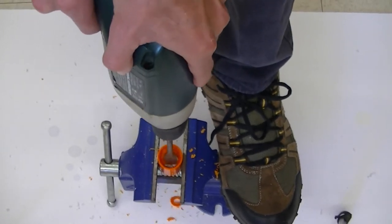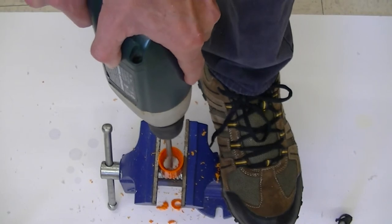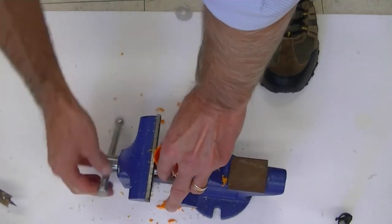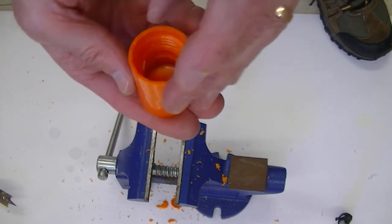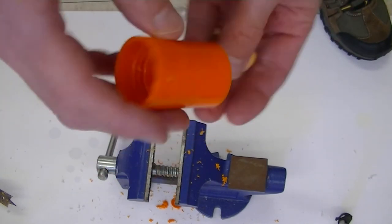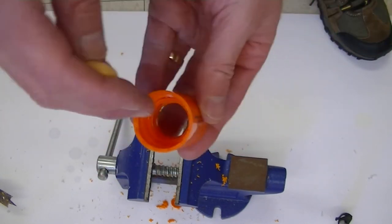Once you've made the hole, drop a Mentos candy through the tube to make sure it can pass freely back and forth through the hole. If it can't, clamp the tube to the vise again and use the drill to widen the hole until the candy easily drops through.